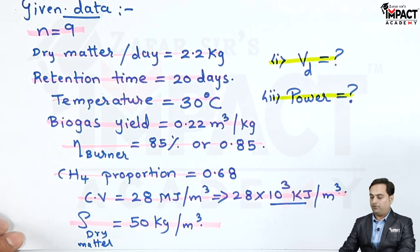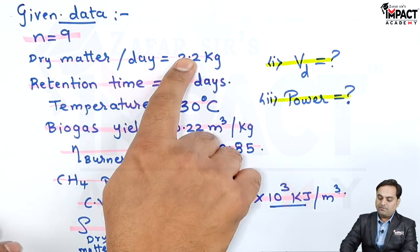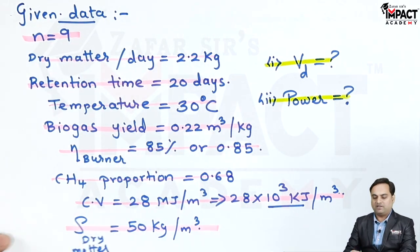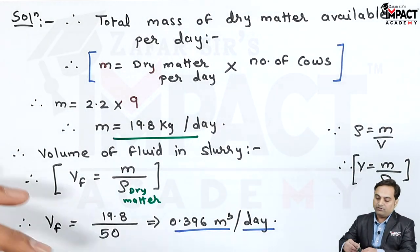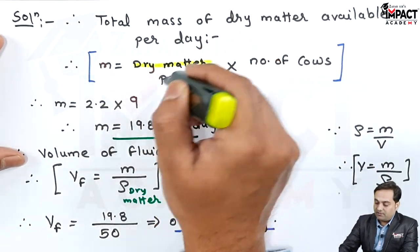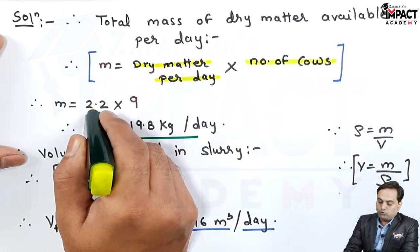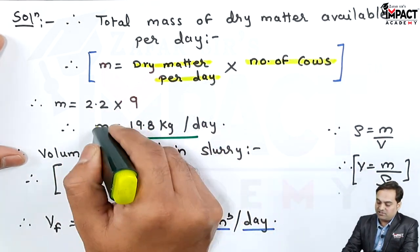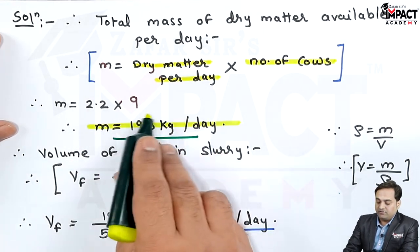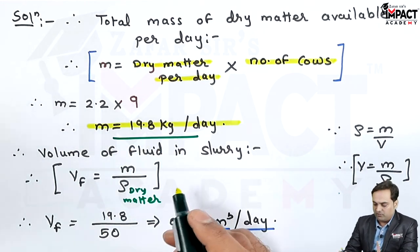Now, how to start this problem. Since they have given the dry matter per cow per day as 2.2 kg, I will multiply it with the number of cows to get the total mass. So first, the total mass of dry matter available per day is dry matter per day from one cow multiplied by the number of cows: 2.2 into 9, which gives 19.8 kg per day. Every day we are getting 19.8 kg of cow dung from the cows, which will be finally fed to the biogas plant.